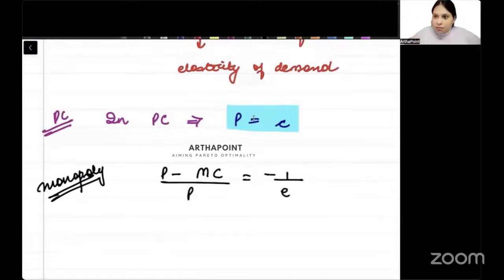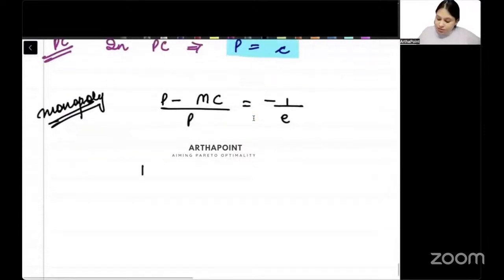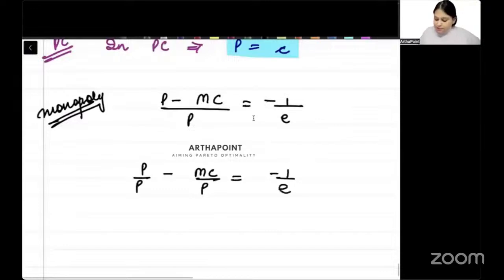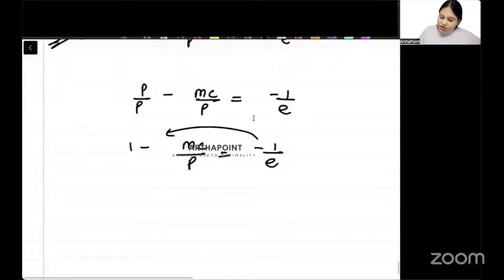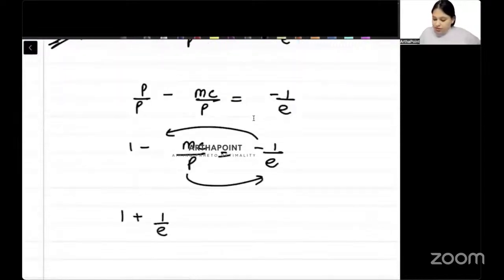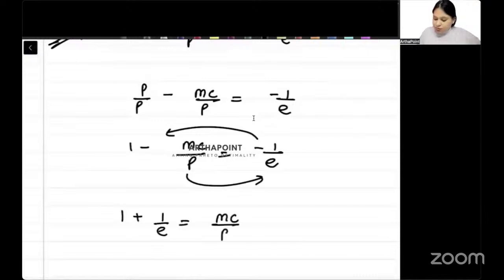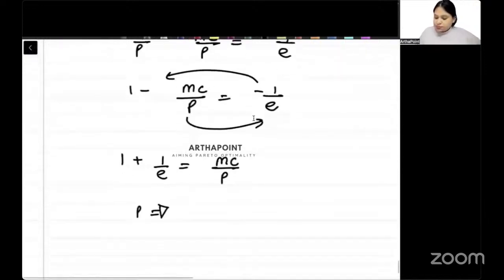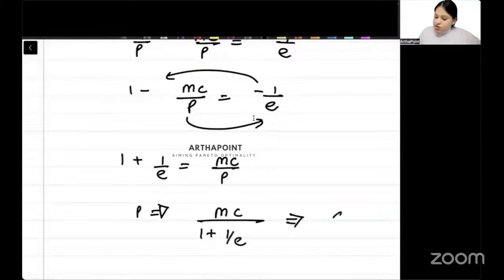This is the formula: P minus MC divided by P equals 1 over E. Rearranging, 1 plus 1 by E equals MC over P, so P equals MC upon (1 plus 1 by E). Suppose marginal cost is constant at small c, then monopoly price P equals c upon (1 plus 1 by E).